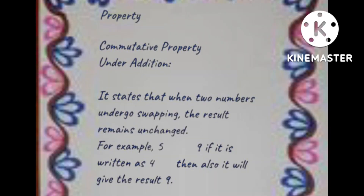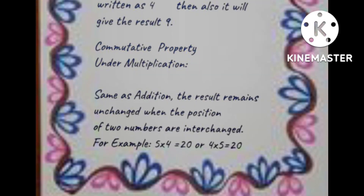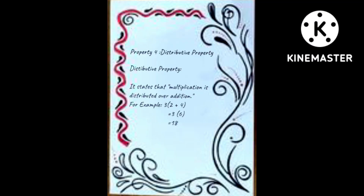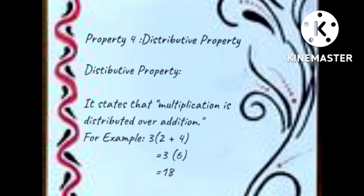The first one is commutative property under addition with information under it. The second one is commutative property under multiplication with information under it. The fourth one is distributive property with information about it.